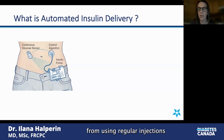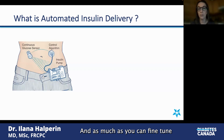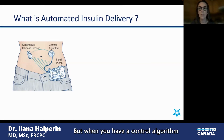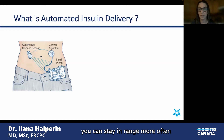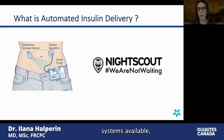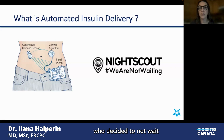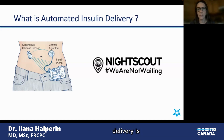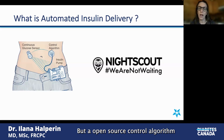It's different from using regular injections or just a pump in open loop, because if you live with diabetes, you know that no two days are the same. As much as you can fine-tune your settings, there are still days where your glucose will go high and low because of all the variability in your day-to-day activities. But when you have a control algorithm modulating insulin delivery, you can stay in range more often. And long before we had commercial systems available, there was a community of individuals living with diabetes who decided to not wait — they got together and did it themselves. That's what DIY automated insulin delivery is: using a commercially available insulin pump and CGM, but with an open-source control algorithm available on the internet.